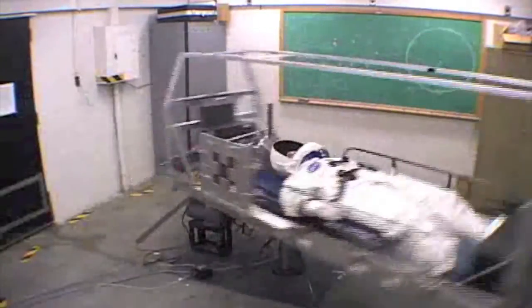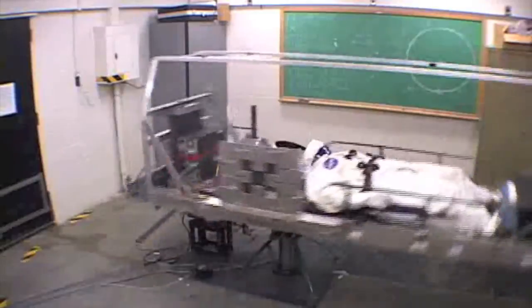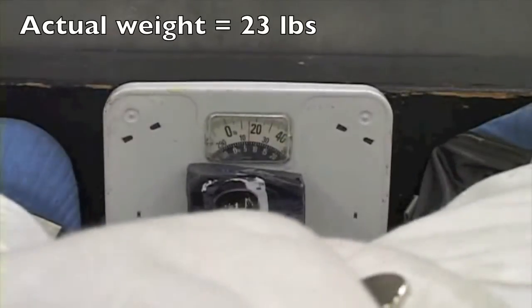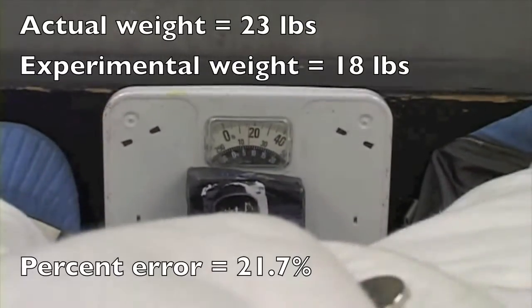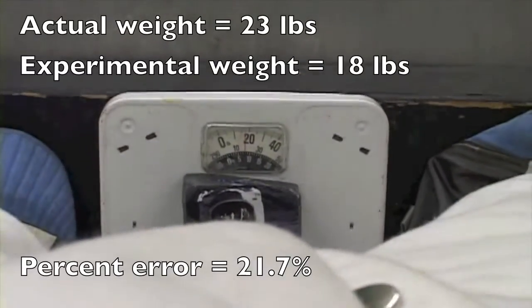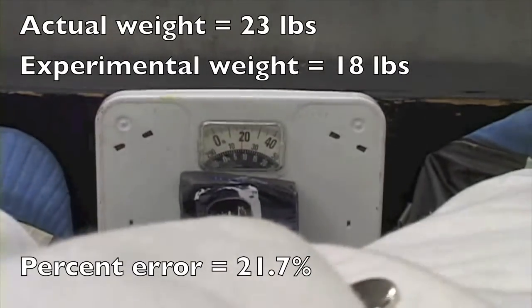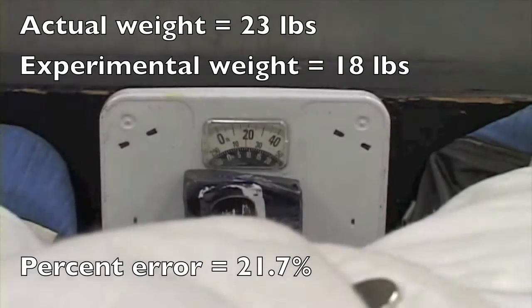Here we are at 24.2 RPMs, which should be creating a 1G force that's acting on our full-size astronaut's feet and our entire point mass astronaut. Let's see how much our point mass astronaut weighs. We're very close. The difference between the actual and experimental weights is because our math assumes an ideal case, and we don't take forces like friction into account.